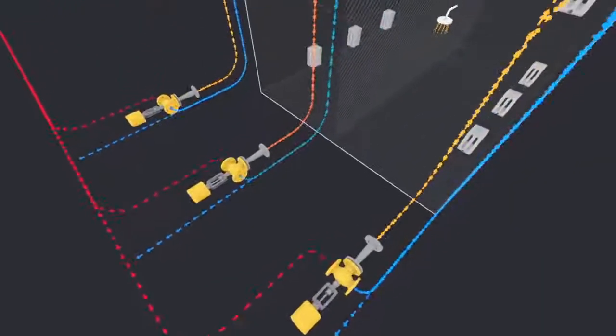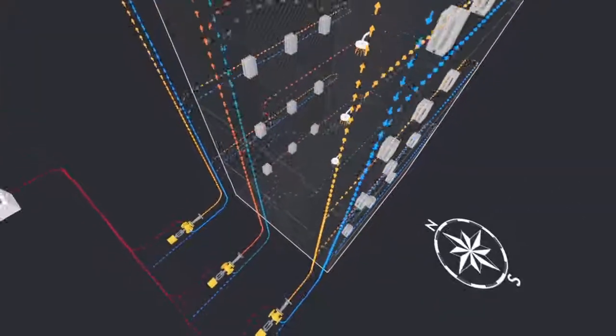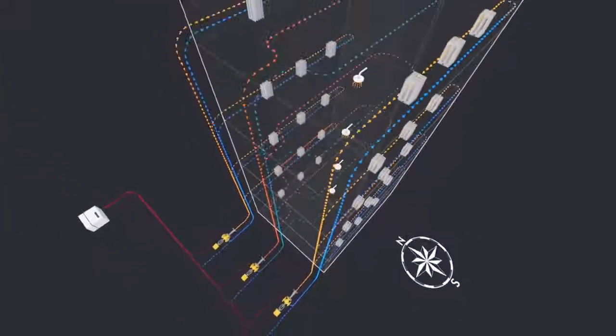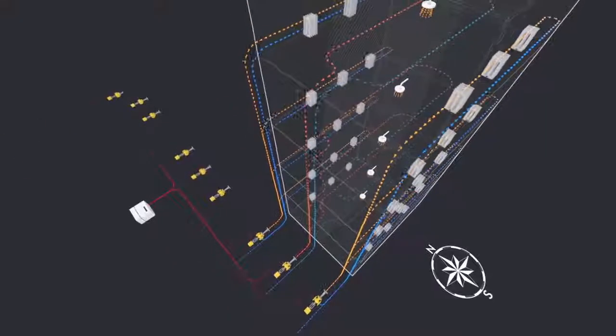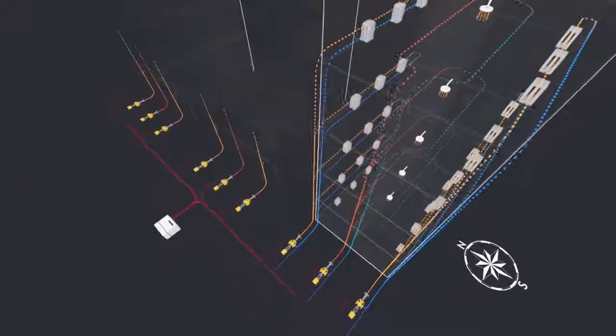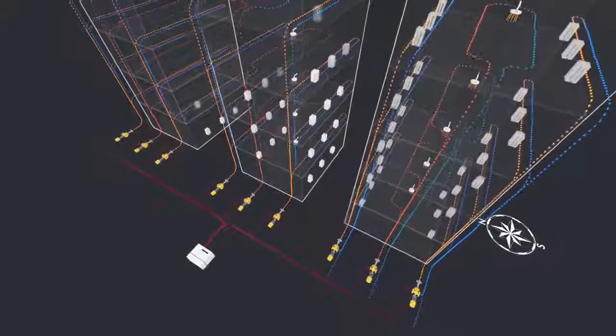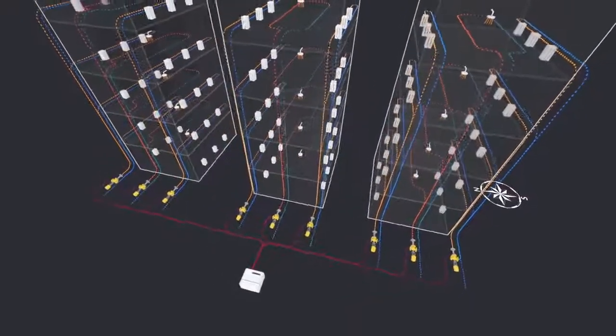In this application, the ejector replaces both the mixing valve and the electric circulator pump at the heating manifold. No flow energy is lost in the Jetomat Ejector. This system enables a main central pump to supply multiple heating circuits simultaneously.